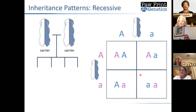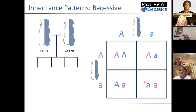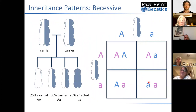In this particular case, when breeding two carriers together: one out of every four puppies would likely be clear, not having the disease; two out of four — about 50% — would actually be carriers with one copy of the genetic mutation; and the remaining 25% would actually be affected because they end up with two copies of the genetic mutation. In recessive diseases, those two copies are what is required to produce an affected dog.